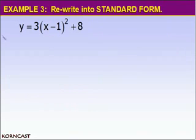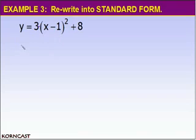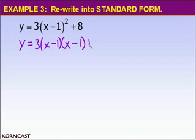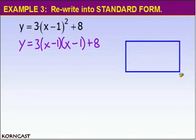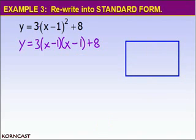Finally, in example three we're going to rewrite this equation in standard form. Notice that we have 3 times the quantity x minus 1 squared. I'm going to follow order of operations and take care of x minus 1 squared first. Please recall that x minus 1 quantity squared is really x minus 1 times x minus 1. So I'm going to rewrite the equation as y equals 3 times x minus 1 times x minus 1, and also don't forget to add 8. I'm going to use the area model to multiply x minus 1 times x minus 1, with x minus 1 along the top and x minus 1 along the side.